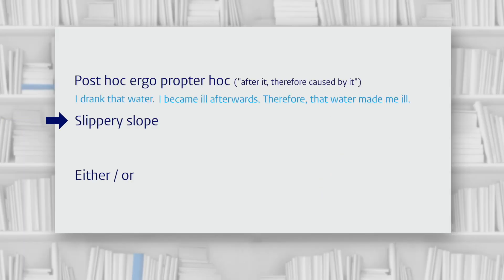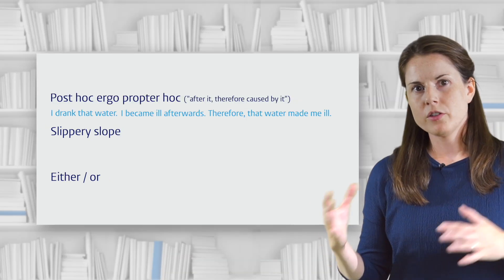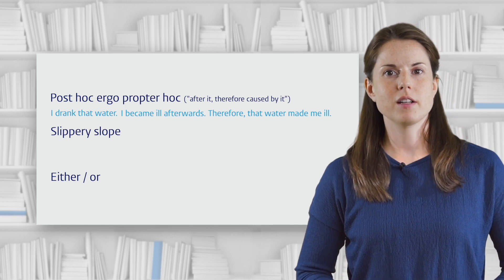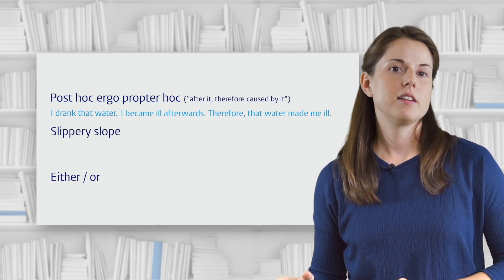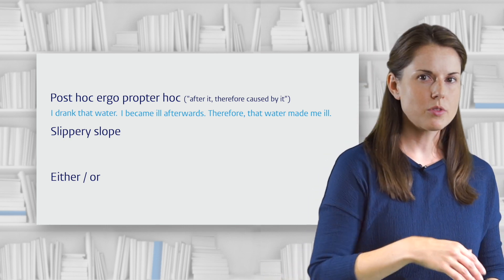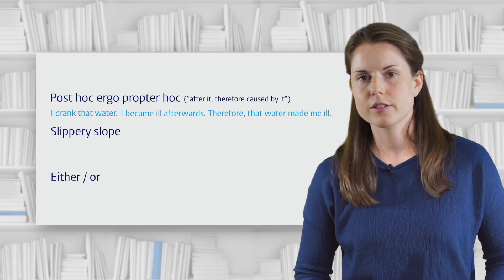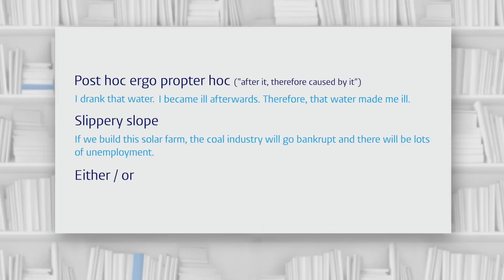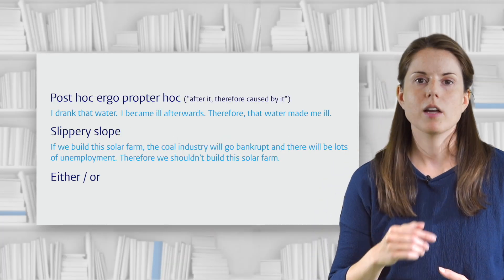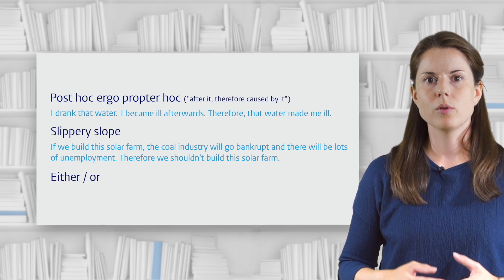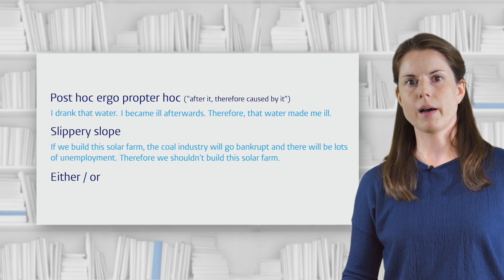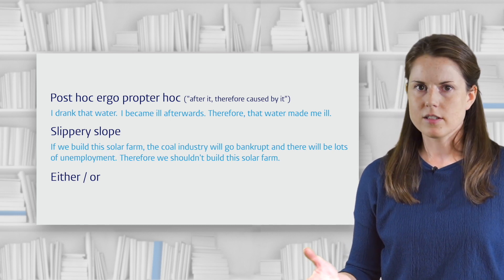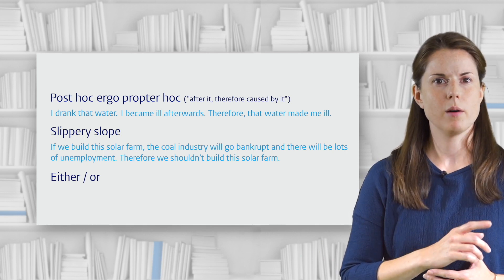Slippery slope. The phrase 'slippery slope' is a metaphor — when you take a step onto a slippery slope, you can easily end up sliding right to the bottom. A slippery slope fallacy is when someone claims that taking one small step along a course of action will lead inevitably to extreme consequences. An example: if we build this solar farm, the coal industry will go bankrupt and there will be lots of unemployment, therefore we shouldn't build this solar farm. In reality, there's a long way to go between building one solar farm and destroying the coal industry.